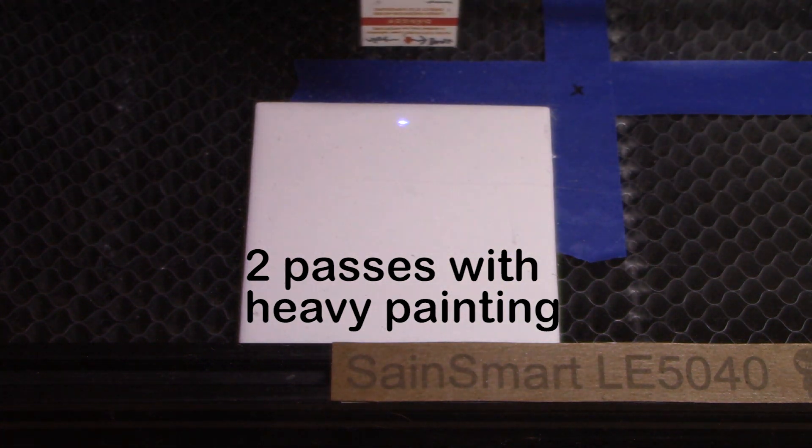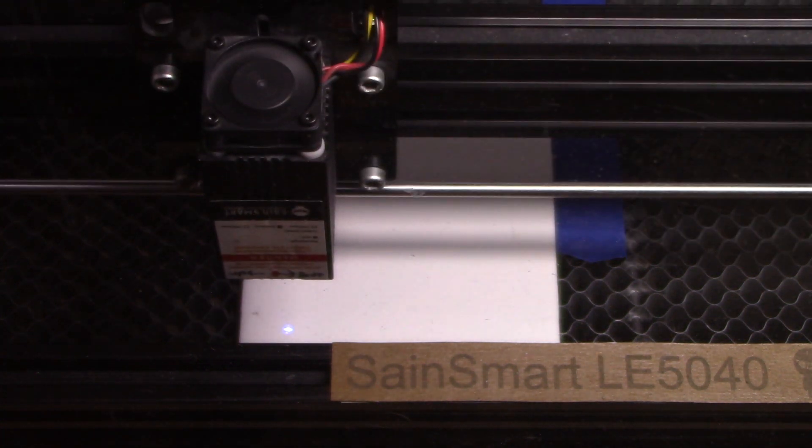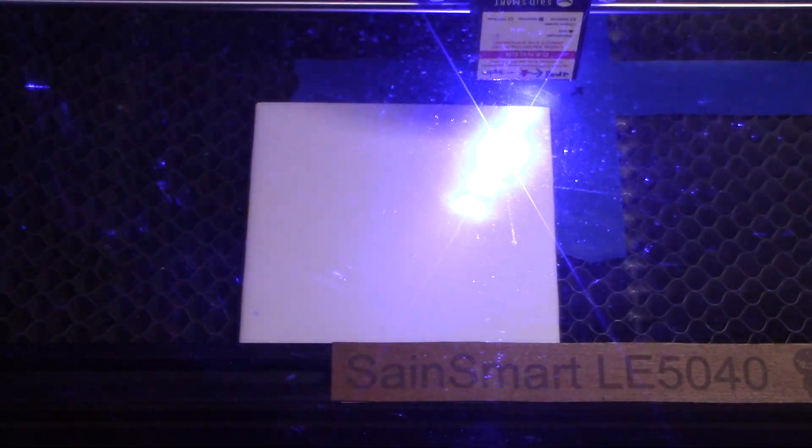This is one of the tiles that was the thicker coat. Again, two passes, one horizontally, one vertically.